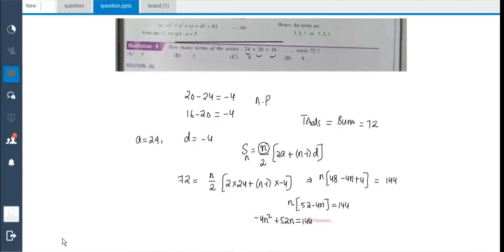So I hope you have understood the thing. Yeah, how I have substituted, right. So 72, we can cross multiply. We can write it as N times 48 minus 4N plus 4 equals to 144. Right. So we can take it forward now. We can write 48 plus 4, this is 52 minus 4N, right, which is 144. I can write it as minus 4N square plus 52N is equal to 144, right.